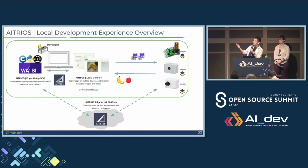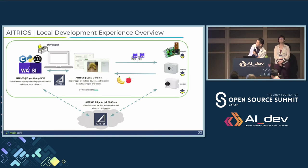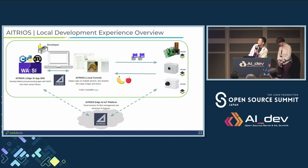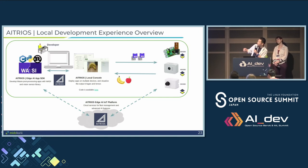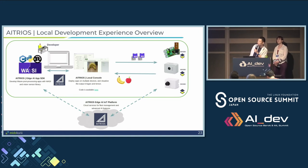For any vision type of application you need a GUI. Local Console is a tool we recently open-sourced. You launch it, connect devices, and it manages up to five devices — you can deploy applications, see the images and inference output. If you want to scale beyond five to hundreds of devices, we do have a cloud service — the ITRIUS cloud service — that gives you fleet management and rich AI services.